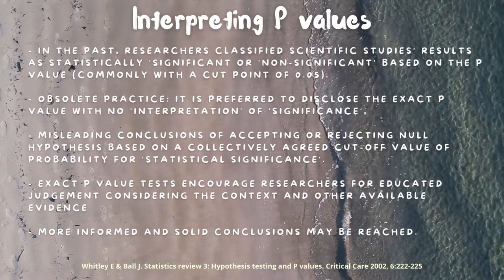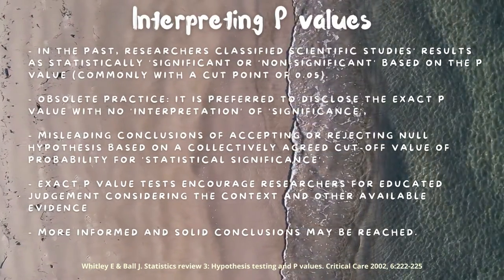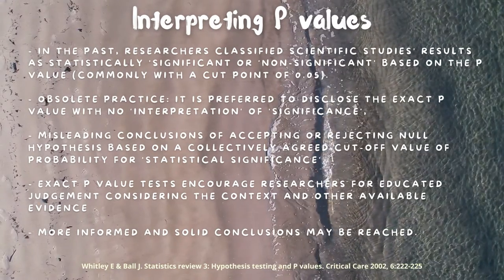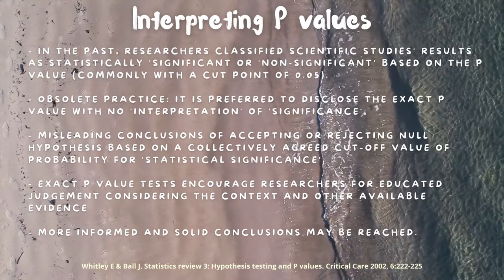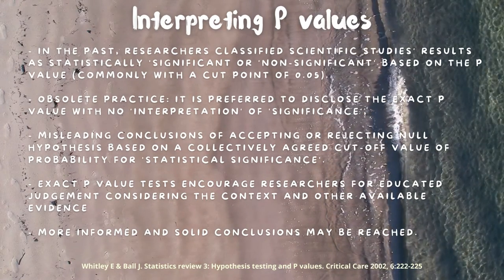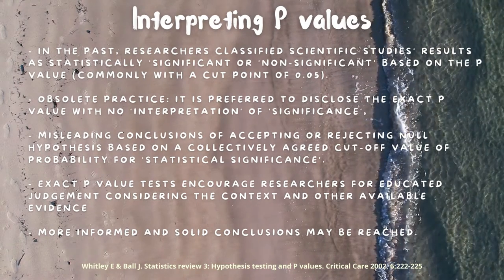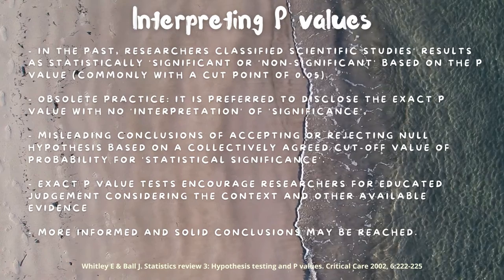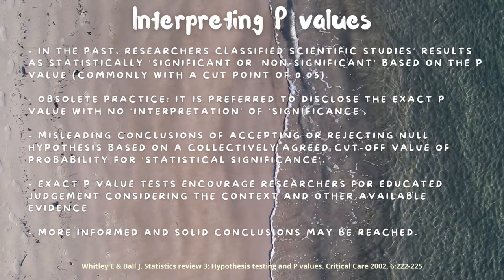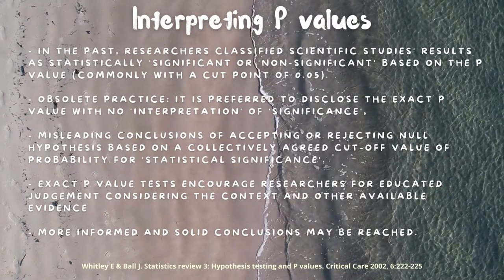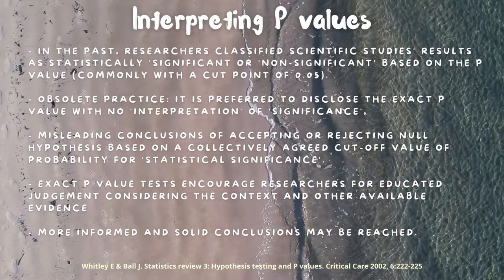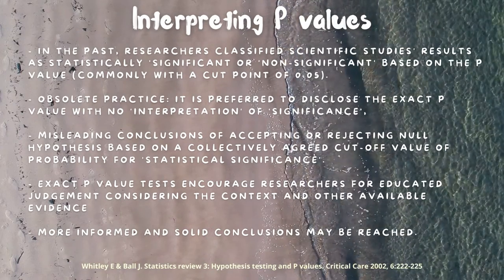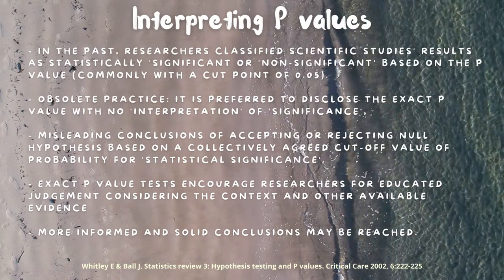Why does this happen? Because there has been a tendency of misleading conclusions — either accepting or rejecting null hypotheses based only on a collectively agreed cut-off value of probability for statistical significance. Using the exact p-value in a research paper encourages educated judgment, considering the context and many other variables within the manuscript plus the available evidence. This leads researchers to reflect and produce a more solid conclusion from what the manuscript and results portray.